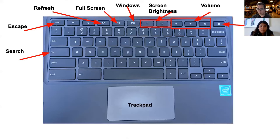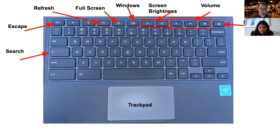Now let's look at the keyboard layout. On the left side, where a normal keyboard has Caps Lock, you have the Search button. At the top you have Escape, then the Refresh button, a Full Screen button, and a Windows/app switcher button to pick through open windows. Next are screen brightness controls, media and volume controls — mute, volume down, volume up — and then a lock screen button. At the bottom is the trackpad.